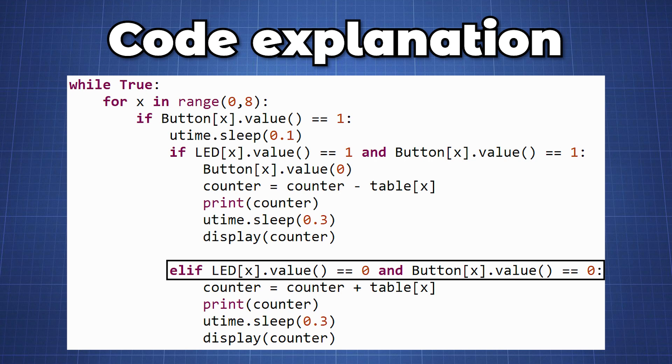If the LED was 0 along with the button, we will add the bit decimal value from the table to the counter, print the counter value, followed by a short delay, and call the display function passing it the value of counter.